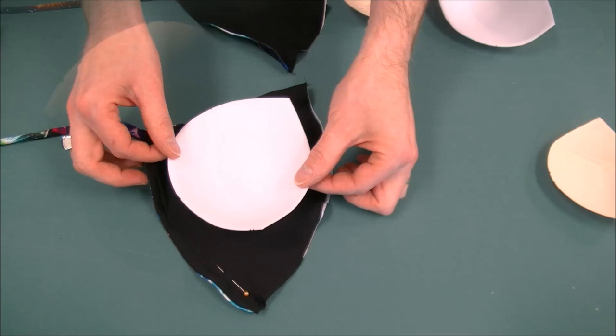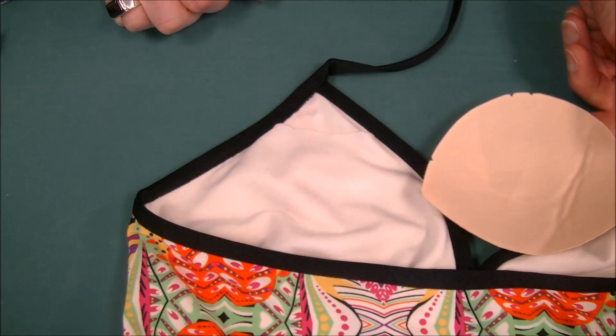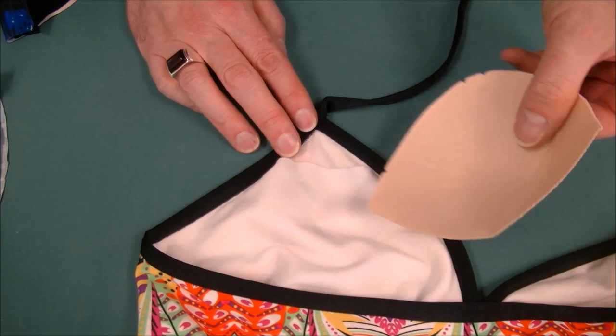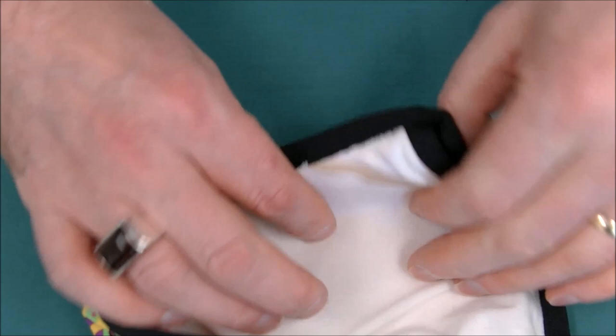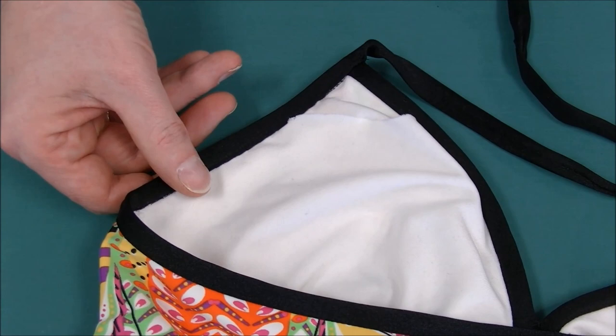As another option for putting a bra form into the suit, you may decide that you want to do an extra layer of lining that's open at the top so that you can slide in a soft form inside your suit. Make it lay flat to give you that bit of extra padding and then if you'd like, you can always remove the form when washing the suit.